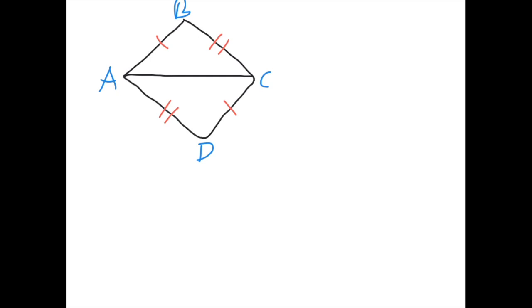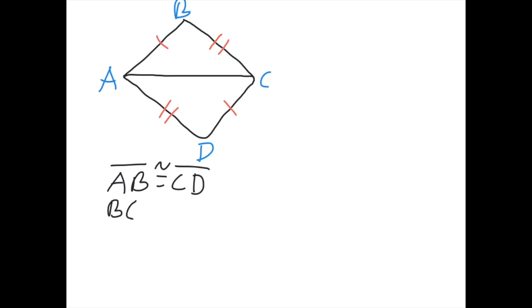First, I want you to name the parts that are congruent. Notice I didn't mark any specific angles congruent — you'll be able to figure those out on your own. Since I marked the sides congruent, let's mark those first. We know because they each have one mark that side AB is congruent to side CD. And because they have two marks, side BC is congruent to side AD.